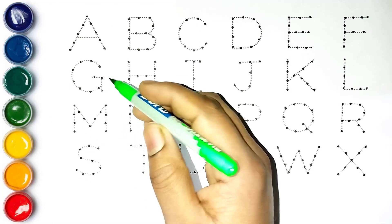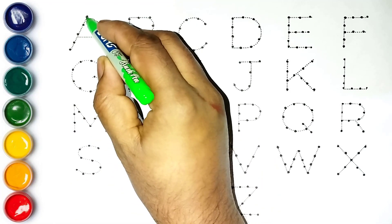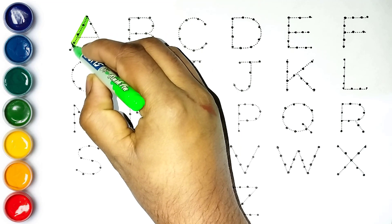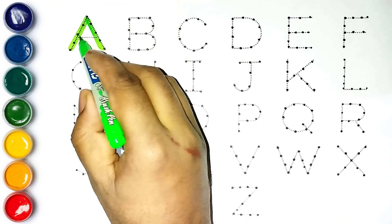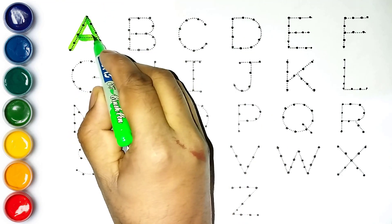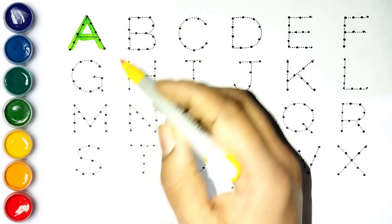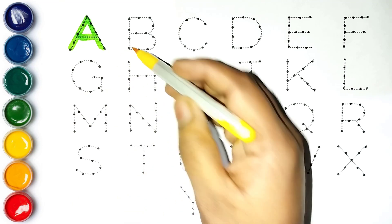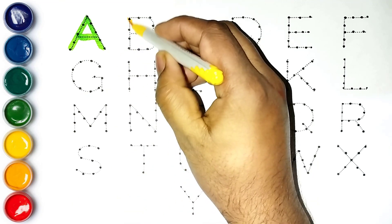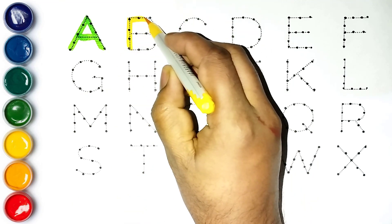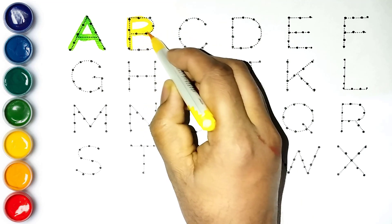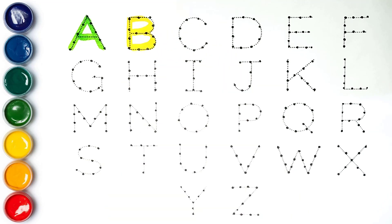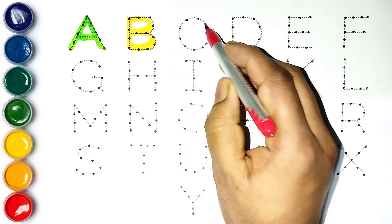Yellow color. A, A for apple. A for apple. Yellow color. B, B for ball. B for ball. Red color.